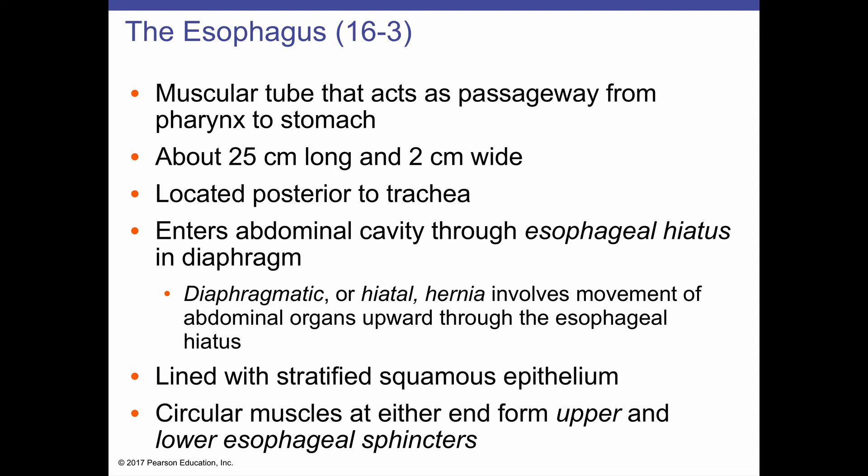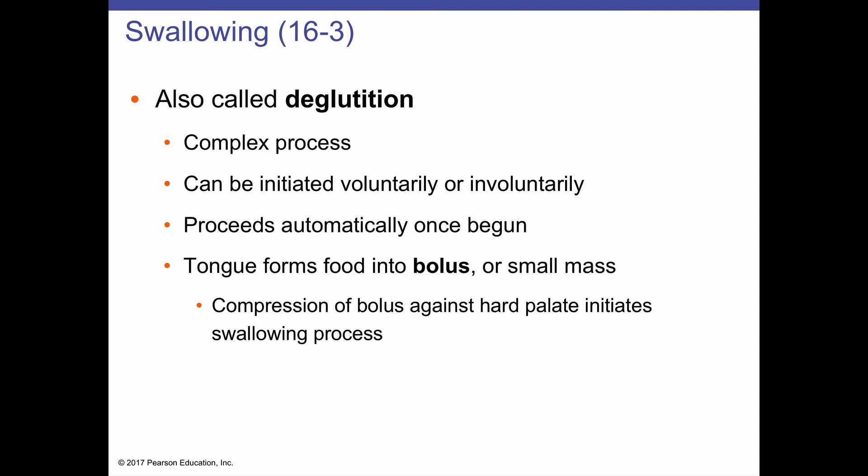The antacid industry that addresses acid reflux is now a multi-billion dollar industry due to the commonality of this condition, which is especially prevalent in cases of obesity or for genetic reasons. The movement of food from the oral cavity down the pharynx into the esophagus — swallowing — is called deglutition. Deglutition is a very complex process. It is initiated voluntarily but can also happen involuntarily, and once it is initiated it continues fully automatically. Only the initial buccal phase is under complete voluntary control.